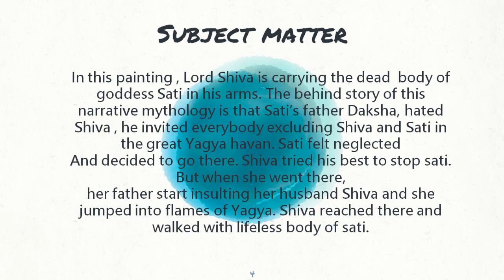Shiva tried his best to stop Sati and understood her feelings well, but Sati did not listen. When she went there, her father Daksha started insulting her husband Shiva. Sati didn't feel good about this. She felt that she had been wronged, and so she jumped into the flames of the yagna and sacrificed herself.